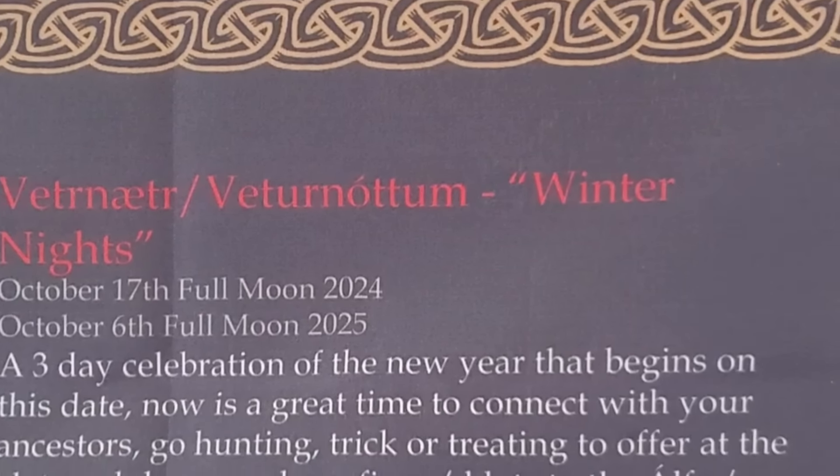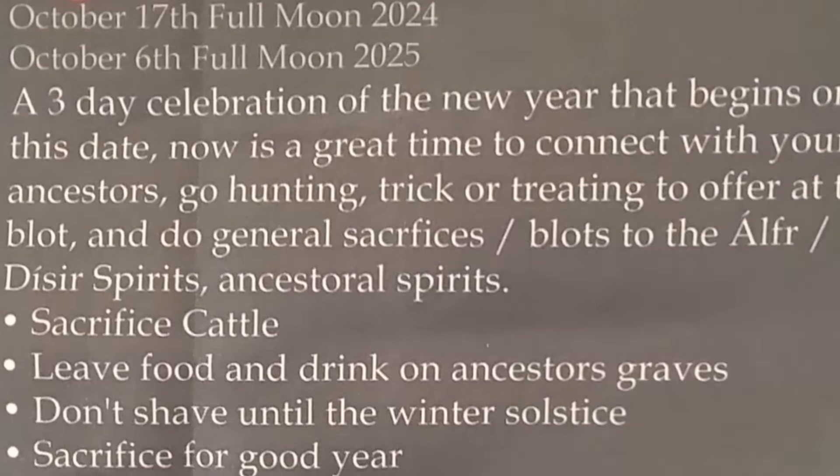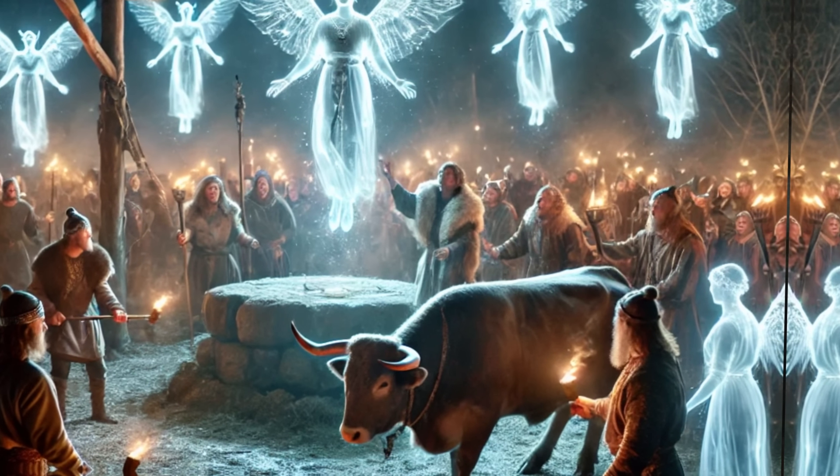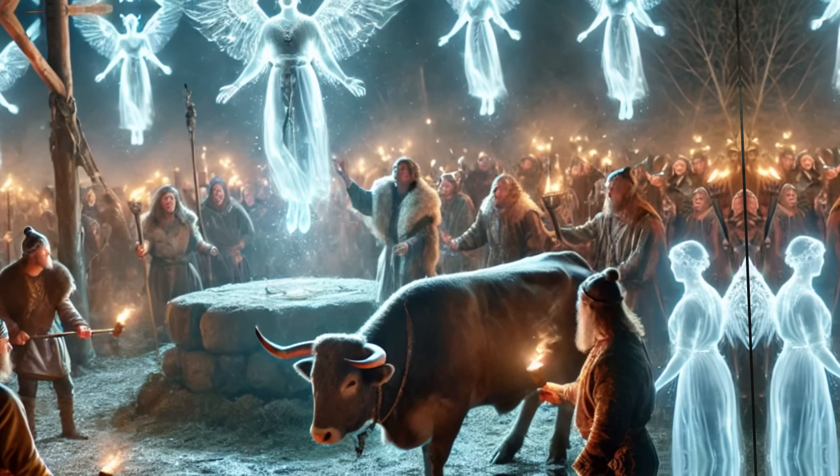As you will see on the calendar for Vetternätter, there is an Alphablot and a Disablot listed as some of the practices done there — sacrifices to the elves and to the Disir. In the sources, both of these are attested at this time of year, but they are also attested at other times. So to sum it up: Alphablot was just one tradition probably practiced at Vetternätter, but there were many other things done at this festival.